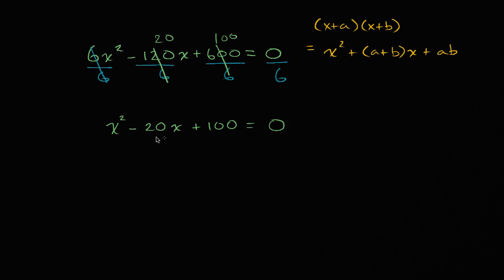And so what we want to do is see if we can factor this into an x + a and an x + b. And so a + b needs to be equal to -20. That needs to be a + b. And then a times b right over here, that needs to be equal to the constant term. That needs to be ab right over there.